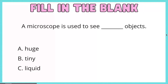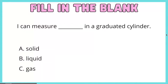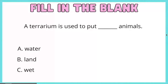A microscope is used to see blank objects. A. Huge. B. Tiny. C. Liquid. I can measure blank in a graduated cylinder. A. Solid. B. Liquid. C. Gas. A terrarium is used to put blank animals. A. Water. B. Land. C. Wet.